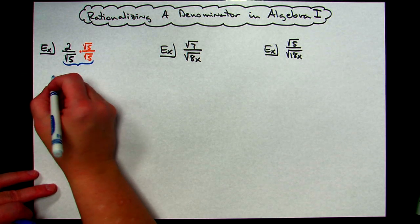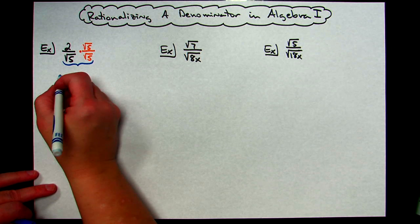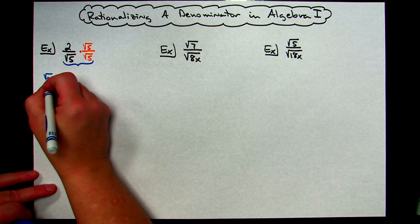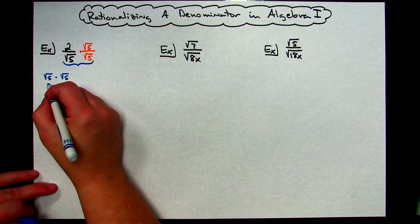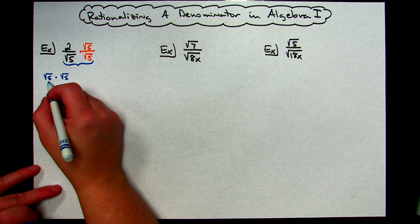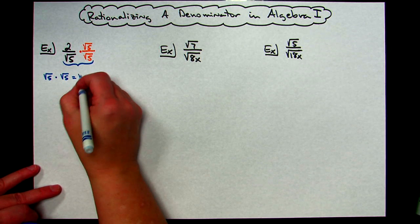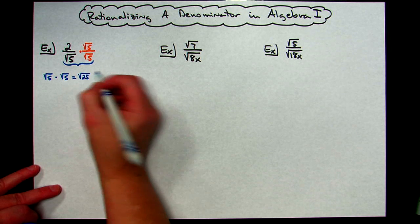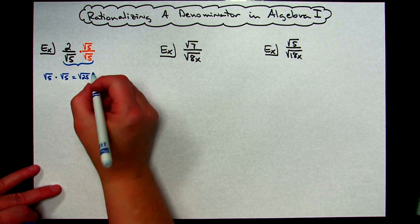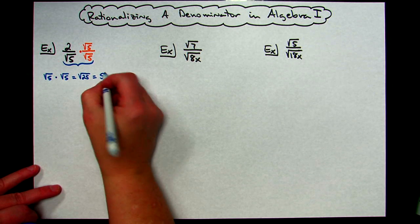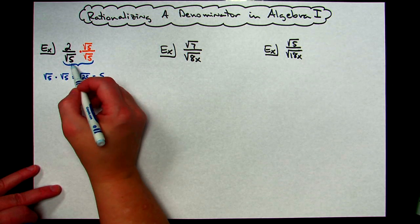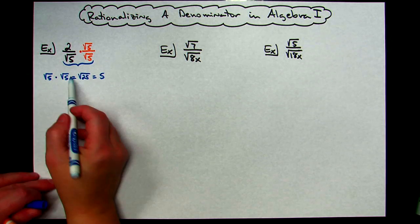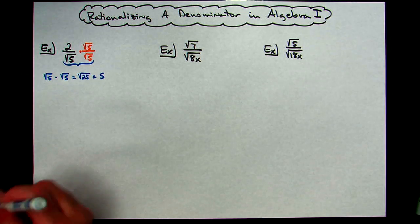You're going to want to be able to just do this in your head, but for demonstration purposes, square root of 5 times square root of 5 — we can multiply radicals and get square root of 25. That turns out to be a perfect square every time, which gives us an answer of just 5. So choosing to multiply by the exact same denominator with the radical will give us the number underneath the radical.